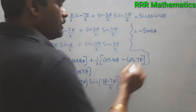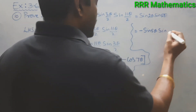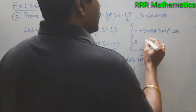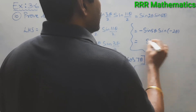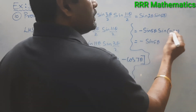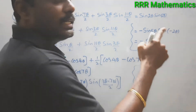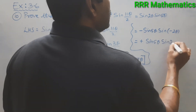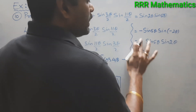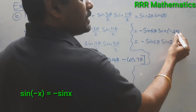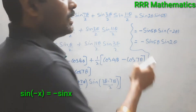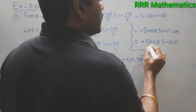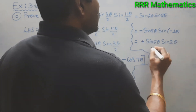And (C−D)/2 = (3θ − 7θ)/2 = −4θ/2 = −2θ. So we get −2·sin(5θ)·sin(−2θ). Since sin(−θ) = −sin θ, sin(−2θ) = −sin 2θ. Therefore minus times minus gives plus, and the expression becomes sin(5θ)·sin(2θ), which is the right hand side. Hence proved.